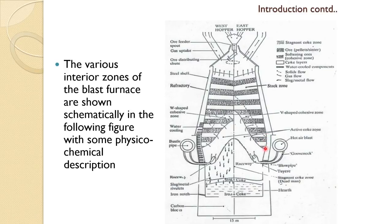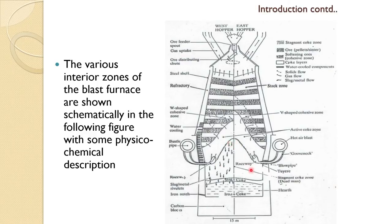This is a very hot zone, so water cooling and other types of cooling are required all around the furnace. The bustle pipe carries the hot air blast. Liquid iron and slag trickle down through the coke, and there is a lump of coke called the dead man, which does not take active part in the reaction but supplies mechanical strength to the burden. From the bottom, liquid slag and iron are tapped from their respective notches.